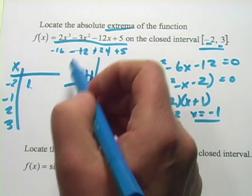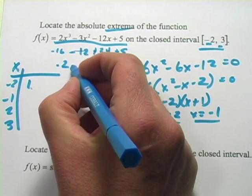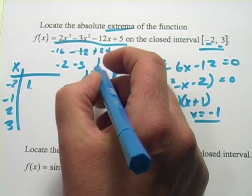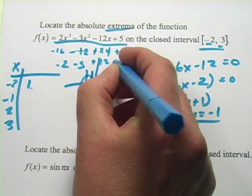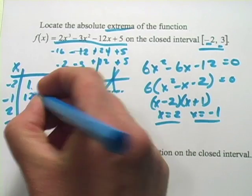Let's try the next one, negative one. So that gives us -2 - 3 + 12 + 5. So that's going to be positive 12.